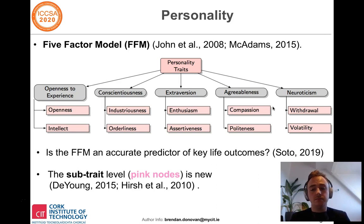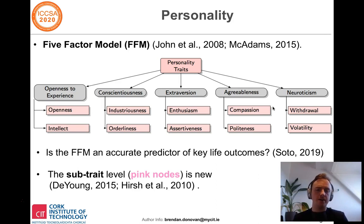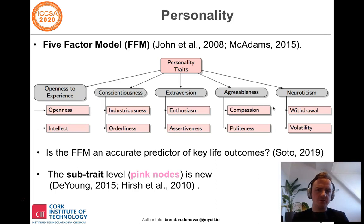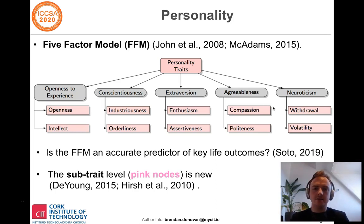In the last 10 to 15 years, there has been the introduction of a potential sub-trait level to the personality trait hierarchy, which are indicated here through the pink nodes. The reason for postulating these sub-traits is that they offer a level of precision and accuracy that is unable to be found at the five-factor level due to its broadness.